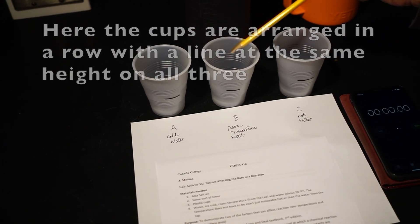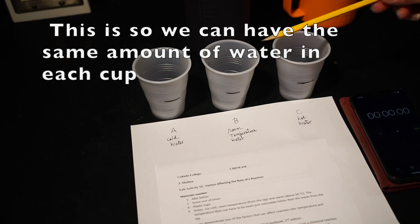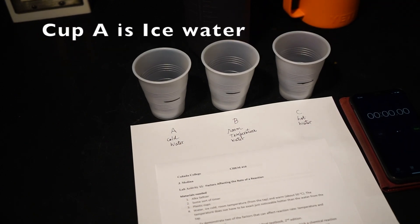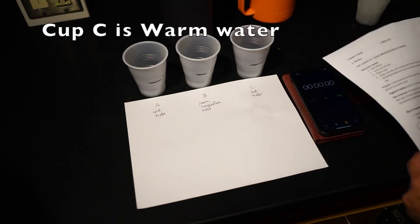This is to ensure the water level is about the same in all three. Cup A is the ice cold water, cup B is the room temperature water, and cup C is the warm water.